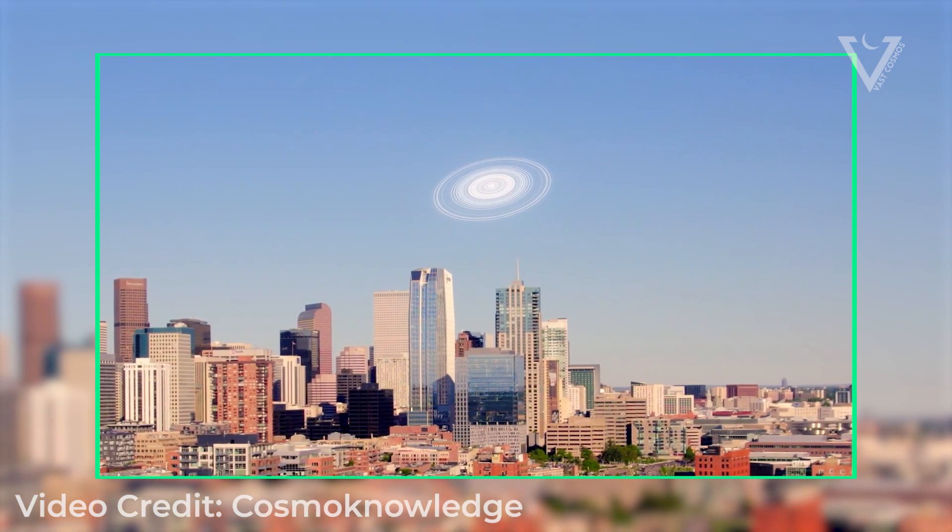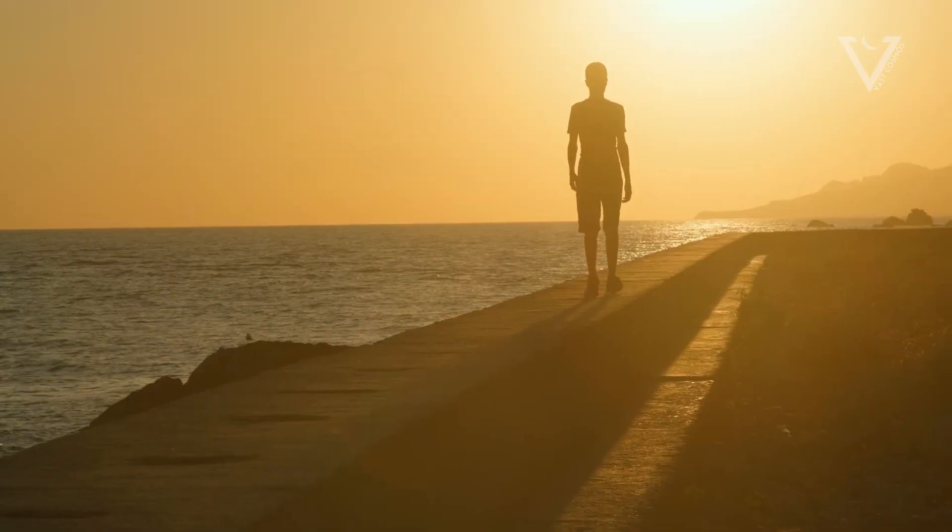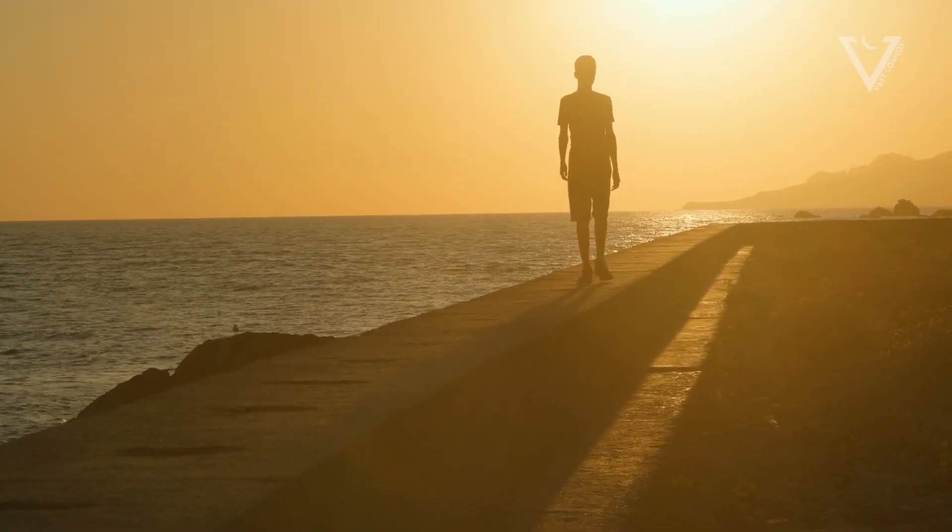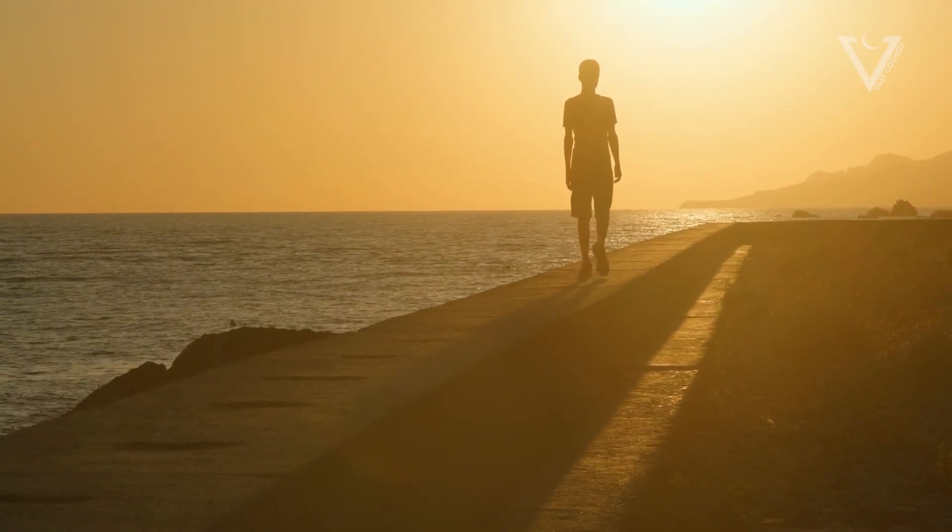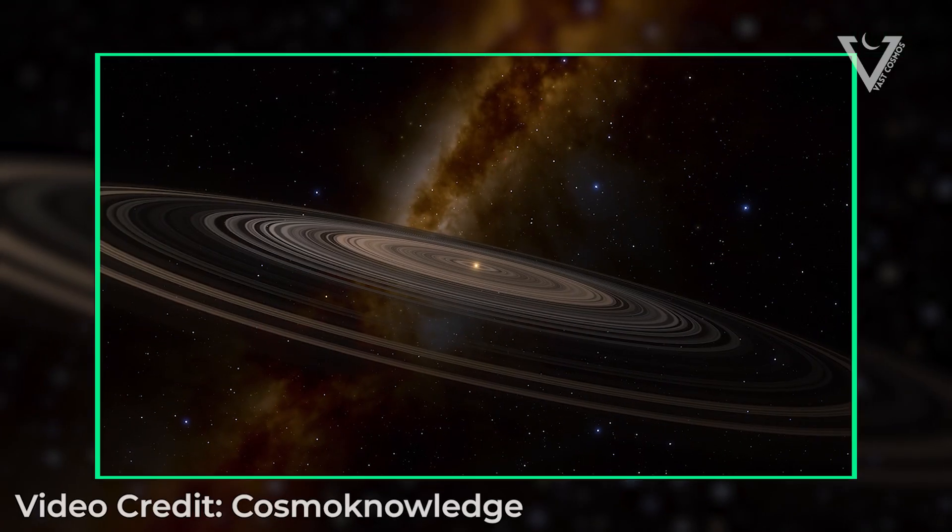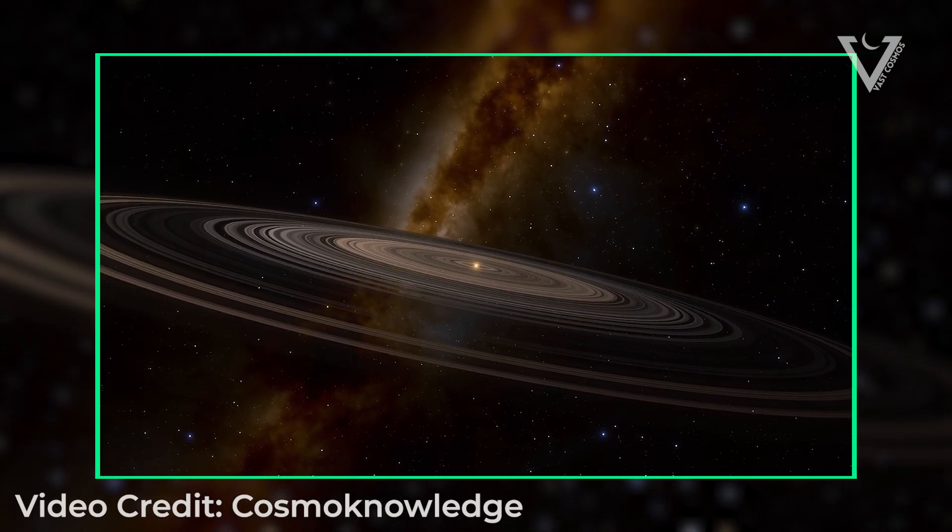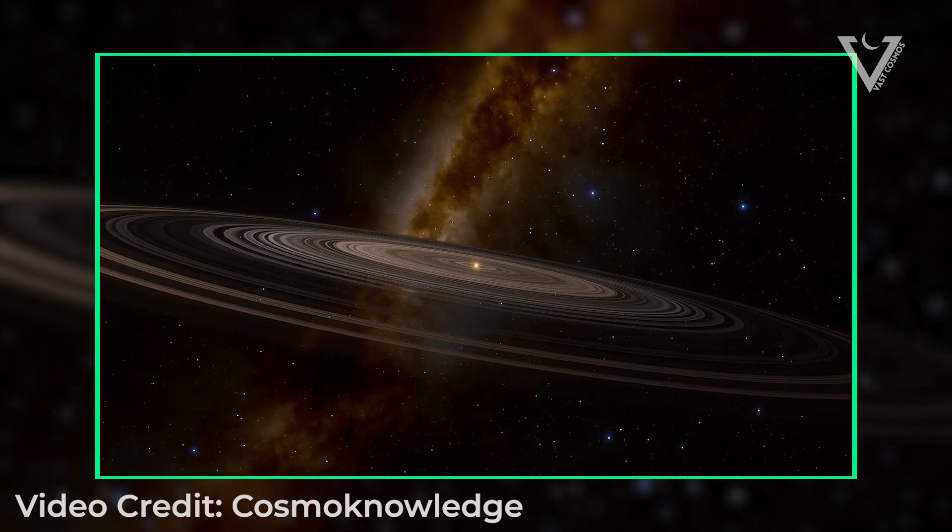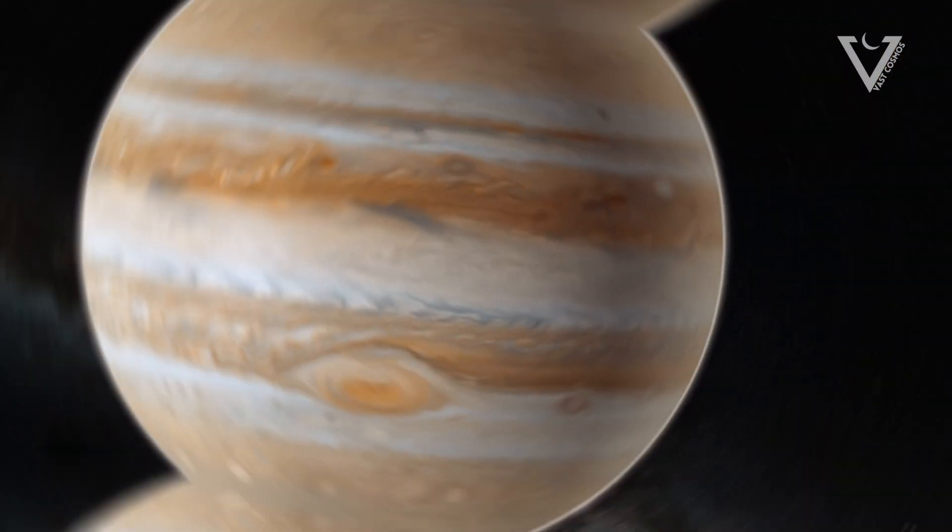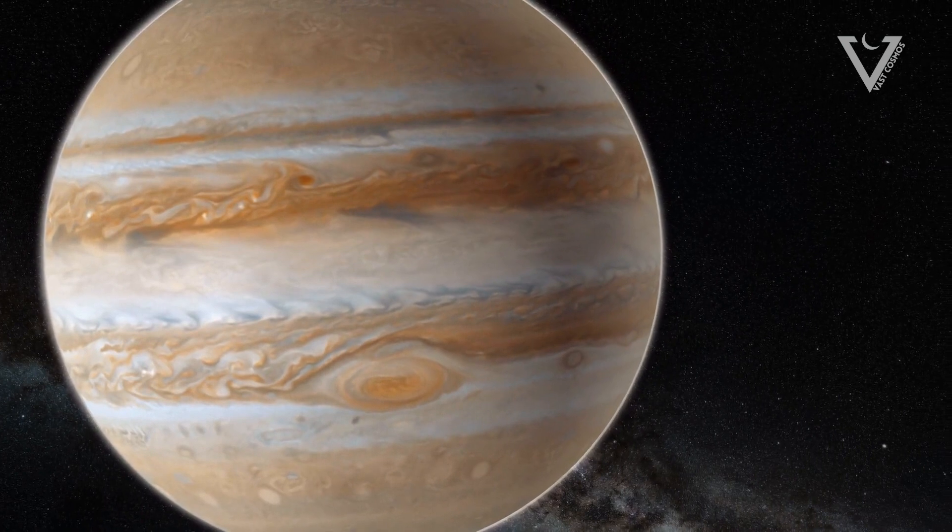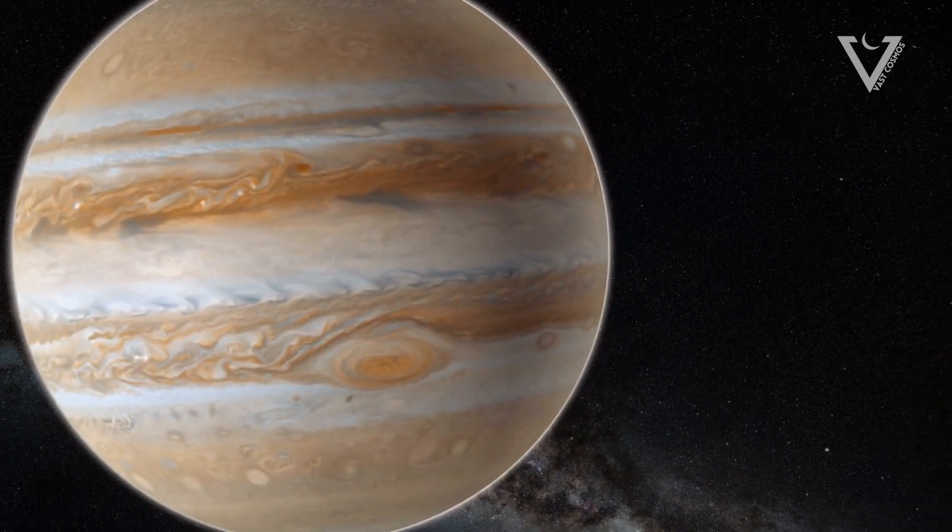With 30 rings spanning over 110 million miles, J1407b challenges our understanding of planetary ring systems. The prevailing theories propose it to be a massive gas giant, possibly 10-40 times Jupiter's mass, whose gravitational forces tore apart its satellites, creating the impressive rings.